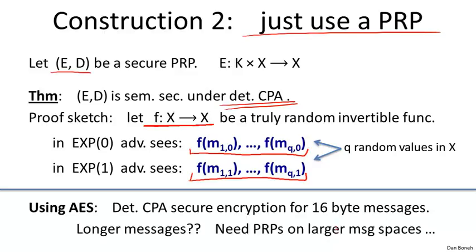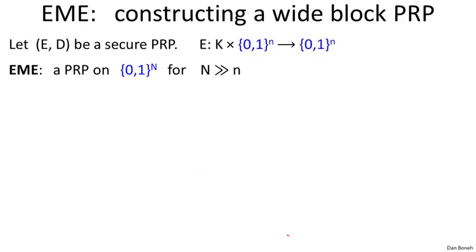What if we have messages longer than 16 bytes? One option is SIV, but what if we wanted to use the PRP construction? Can we construct PRPs with message spaces bigger than 16 bytes? In the past, we constructed PRFs with large message spaces from PRFs with small message spaces. Here, we're going to construct PRPs with large message spaces from PRPs with small message spaces. There's a standard mode called EME that constructs a PRP operating on capital-N-bit blocks where capital N is much bigger than the small n-bit blocks.